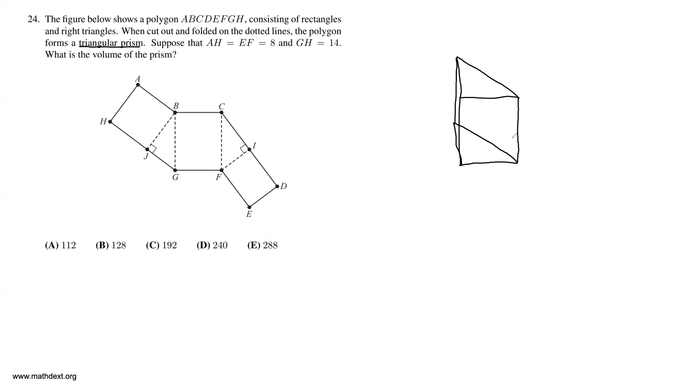So with this net of a triangular prism, immediately what you can see is that these two triangles, BJG and CIF, are the bases. And the other three rectangles ABJH, BCFG, and IDEF are the sides of the triangular prism.